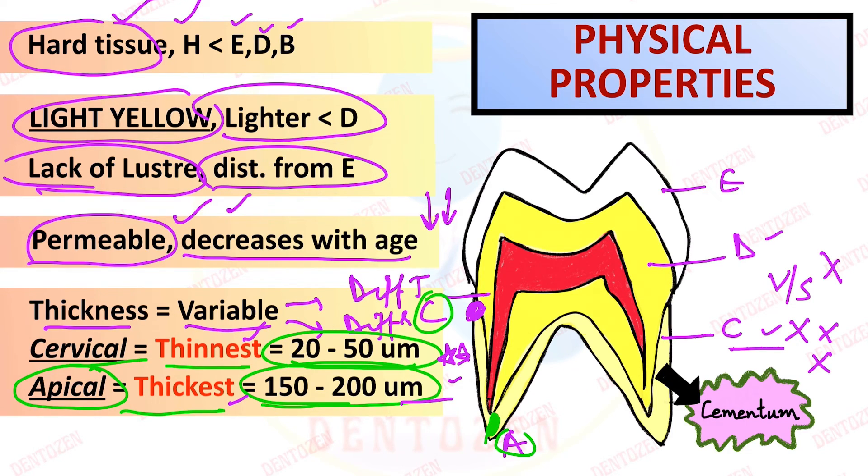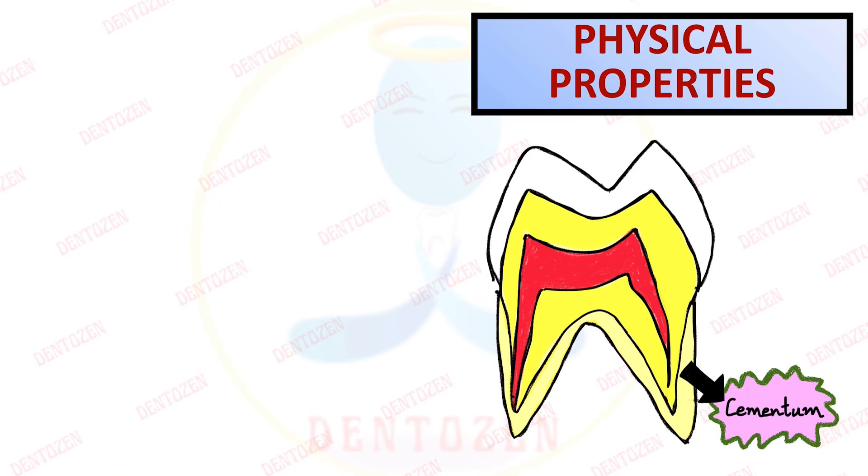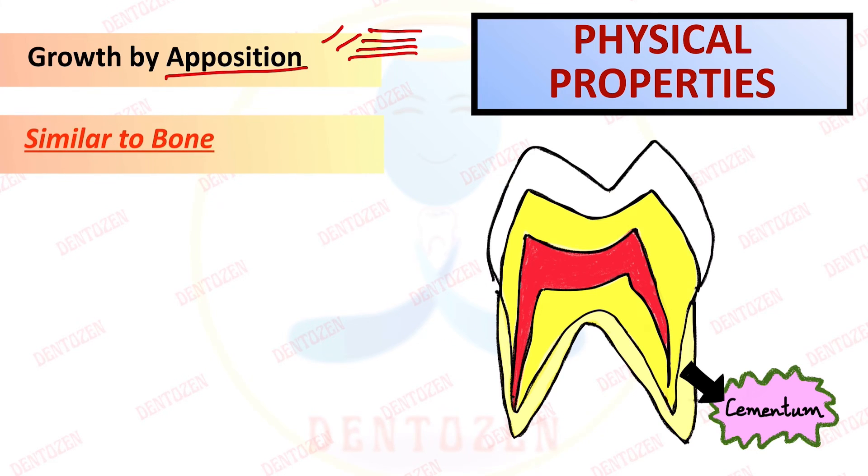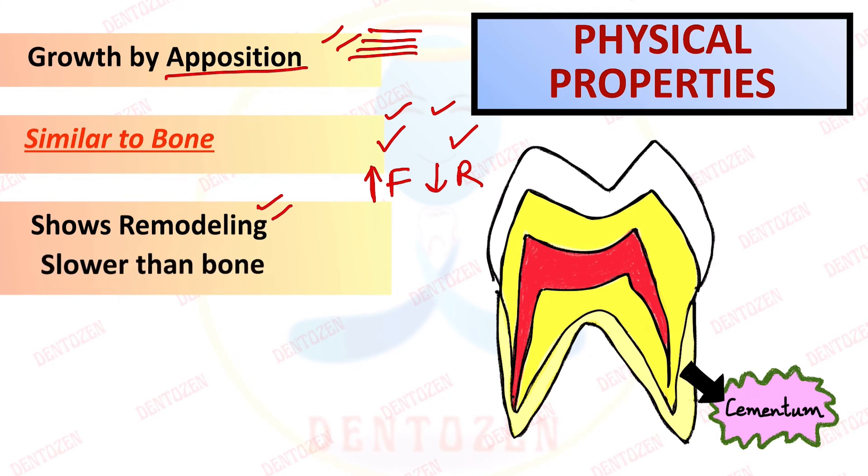Now this cementum is surrounding the apical foramen. Apical, apex means opening, so it is the opening at the apex through which the vessels and nerves enter the pulp of the tooth. So the cementum surrounds this opening. Now if we talk about the growth of cementum, it grows by apposition, it grows in layers, and it is very much similar to bone. Similar to bone, it shows remodeling. That means it keeps forming and it keeps resorbing.